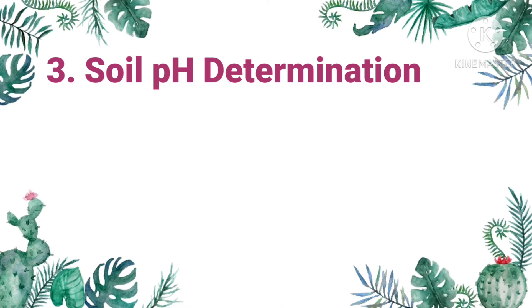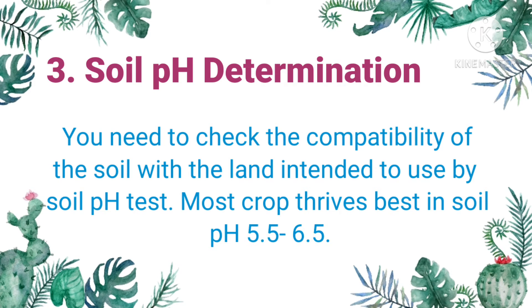Third, soil pH determination. Crops also select the type of soil they grow on. You will need to check the compatibility of your soil with the land you intend to use by running a soil pH test. A soil pH meter ranges from 1 to 14. Most crops thrive best in soil with a pH reading within 5.5 to 6.5.